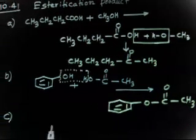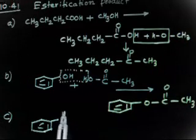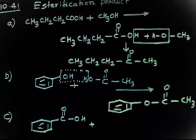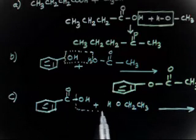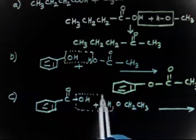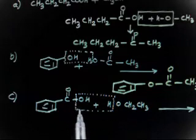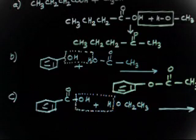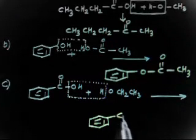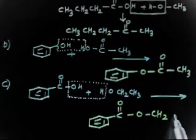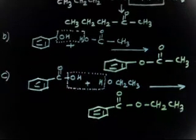For Part C, you again have one acid plus one alcohol. This molecule is called benzoic acid — COOH — plus the alcohol CH3 CH2 OH. Once again you have to lose one molecule of water. The final product after removing H2O will be the benzoate ester: C6H5 C(=O) O CH2 CH3.